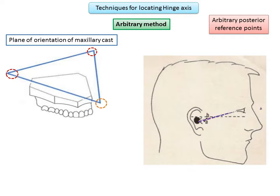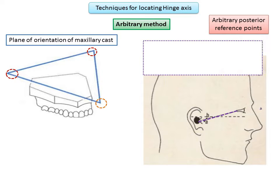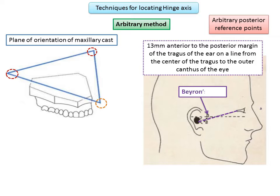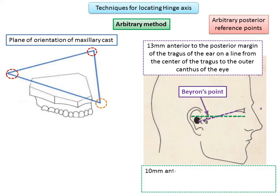The first posterior reference point: a purple dotted line connects the outer canthus of the eye and the tragus of the ear, and a point is marked 13 millimeters anterior to the posterior margin of the tragus — this is known as Behrens' point. Another point is Birdstrom's point: the green dotted line represents the Frankfurt horizontal plane, and the point chosen is 10 millimeters anterior to the center of the external auditory meatus.